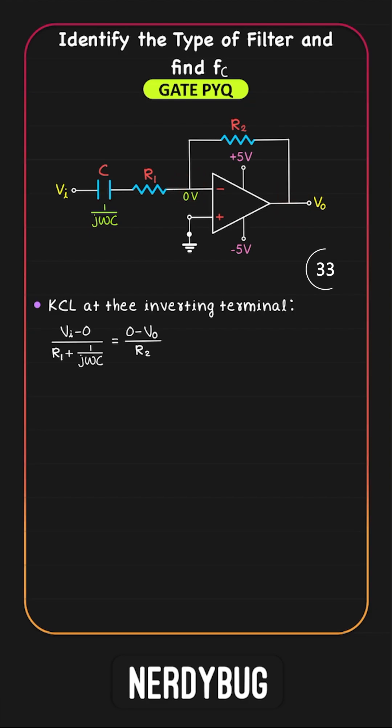From this, we can write an expression for the gain. When omega is 0, gain becomes 0. When omega is infinite, gain takes its maximum value, which means this is a high-pass filter.